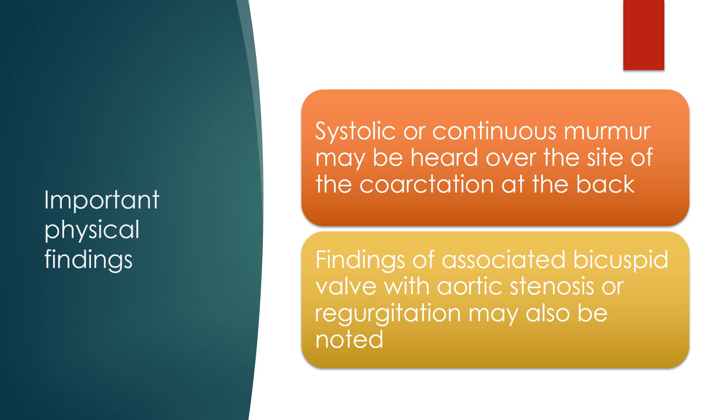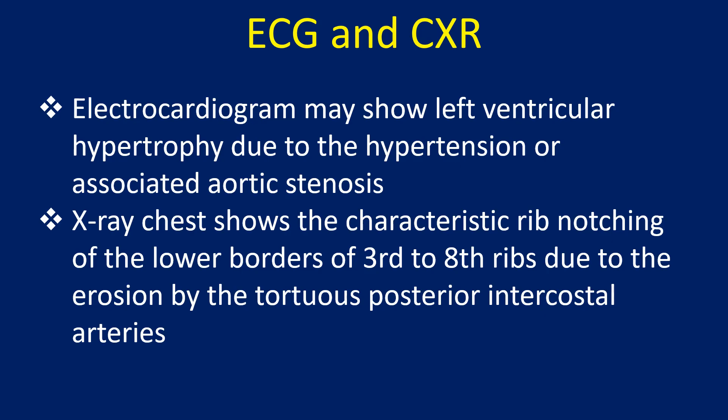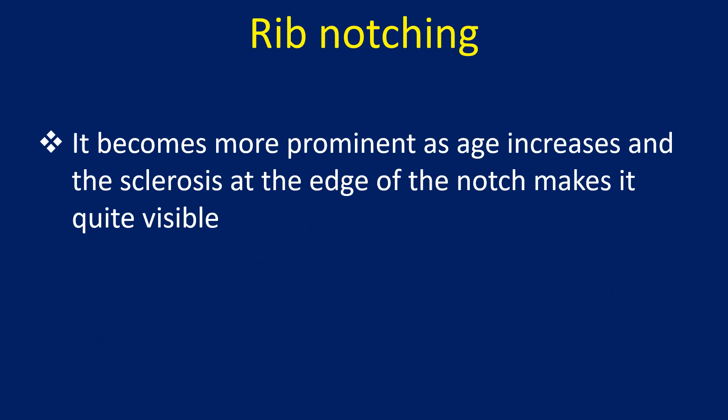Findings of associated bicuspid valve with aortic stenosis or regurgitation may also be noted. Electrocardiogram may show left ventricular hypertrophy due to hypertension or associated aortic stenosis. X-ray chest shows the characteristic rib notching of the lower borders of the 3rd to 8th ribs due to erosion by the tortuous posterior intercostal arteries. It becomes more prominent as age increases and sclerosis at the edge of the notch makes it quite visible.